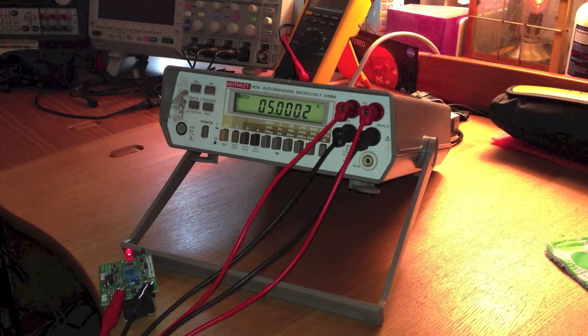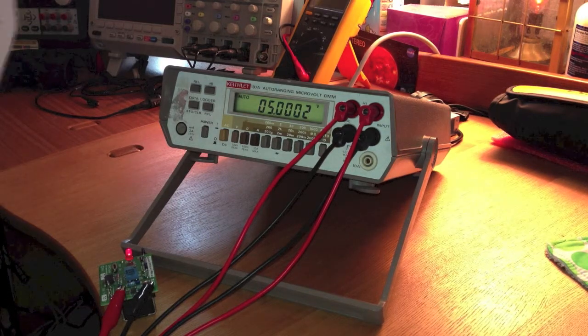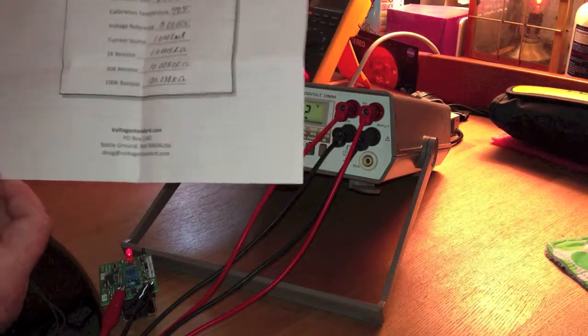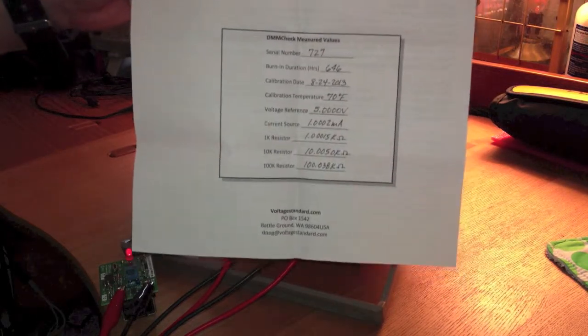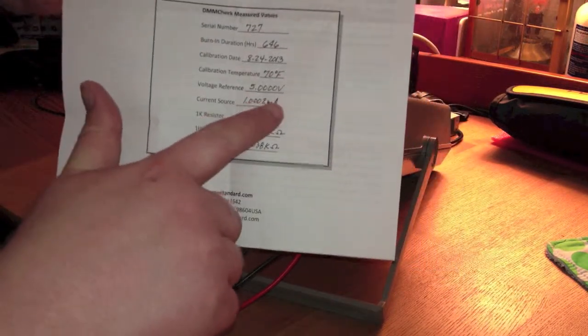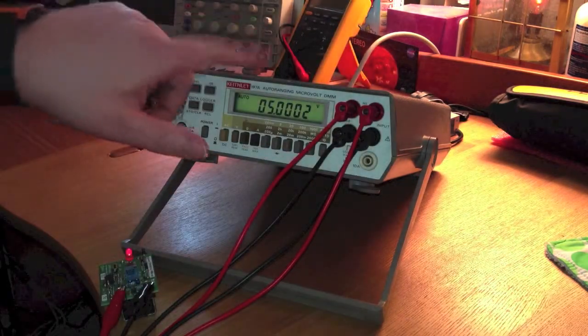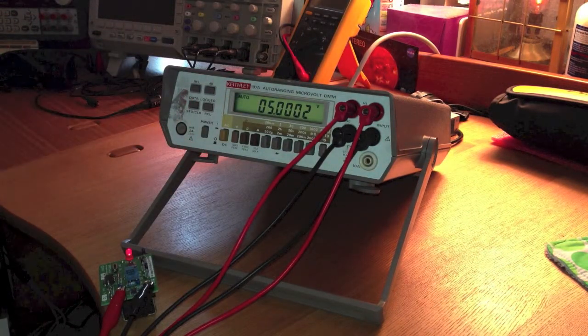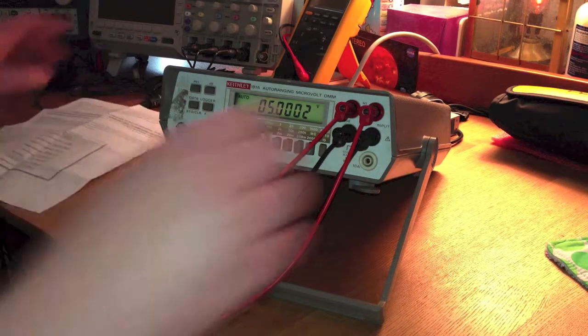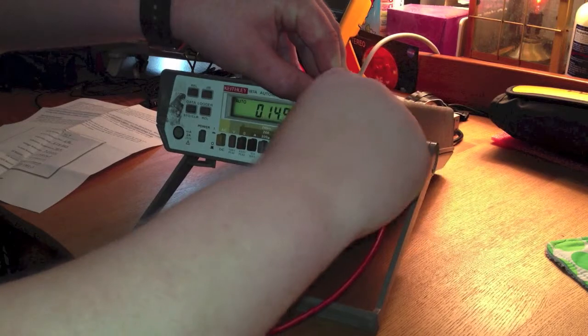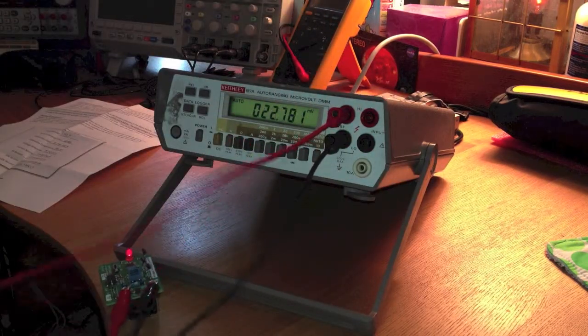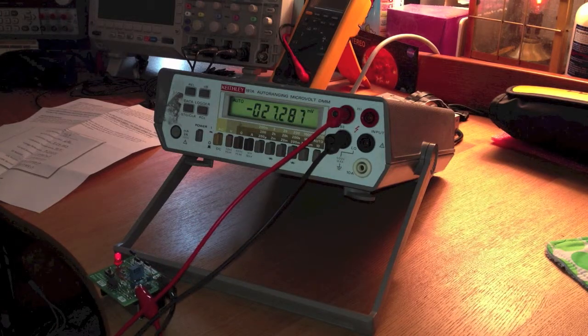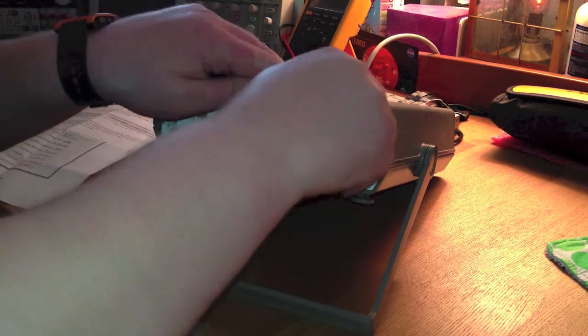Now the sheet that comes with the meter here shows 5.000. Earlier before it had warmed up, it was actually giving me that spot on. I don't know if it's just warmed up and it's a little outside that range or what. Yeah, there we go.